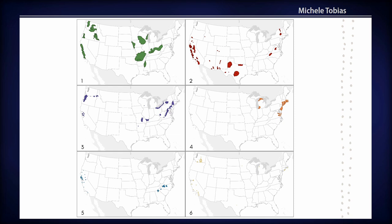One of the more interesting groups is group 4, the orange group, which is solidly coastal — we've got a definite Eastern Seacoast situation, but also the Great Lakes ended up largely in this group. This seems to be related to elevation but also particularly a maritime-like climate, because the Great Lakes are so large they tend to have a climate more similar to an ocean coast than you'd expect with any smaller lake.